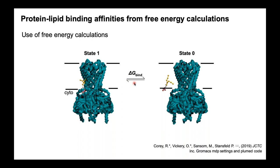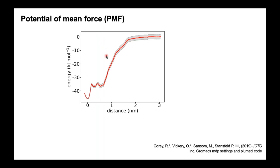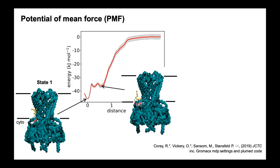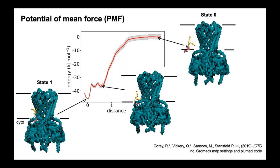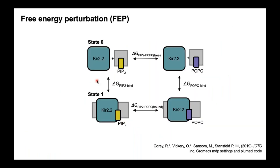The first technique is potential mean force calculations, or PMF. This involves using steered MD to slowly remove the lipid from the binding site into the bulk membrane, then using umbrella sampling along this reaction coordinate to generate a one-dimensional energy landscape. The free energy of binding is the difference between the energy well and bulk. In the case of KEA 2.2 and PIP2, it's about 46 kilojoules per mole. Another technique is free energy perturbation, or FEP, which involves taking your molecule of interest — PIP2 — and converting it via an alchemical transformation to a generic lipid such as POPC.